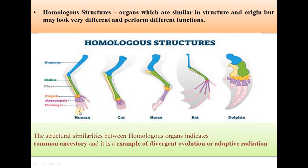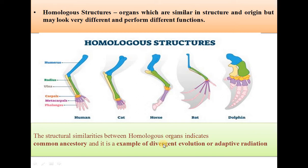Forelimbs of vertebrates are a very good example of homologous organs. They are built on the same fundamental plan, yet they appear different and perform different functions. The forelimbs of human, cat, horse, bat and dolphin all consist of humerus, radius, ulna, carpals, metacarpals and phalanges. This basic similarity is due to the fact that all these limbs have evolved from a common type called the pentadactyl limb. The structural similarities between homologous organs indicate common ancestry, and this is an example of divergent evolution or adaptive radiation.